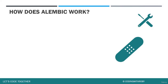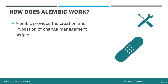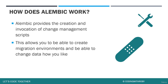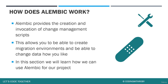This leads us to how does Alembic actually work? Alembic provides the creation and invocation of change management scripts. This allows you to create migration environments and be able to change data how you like. In this section you will learn how to use Alembic for a project. We will be adding a new database table while enhancing one of the current database tables — users — that we've already created, and then adding a relationship between them. Alembic is a very powerful tool because it allows you to modify your databases in real time.